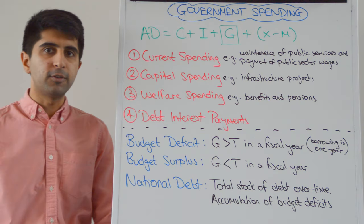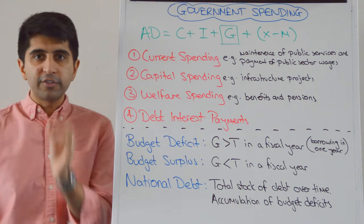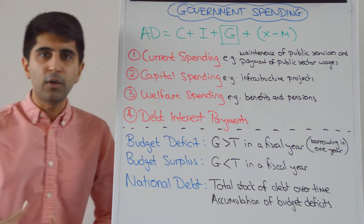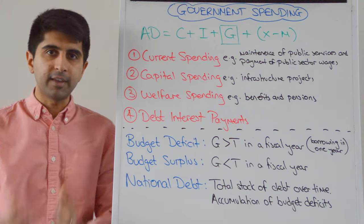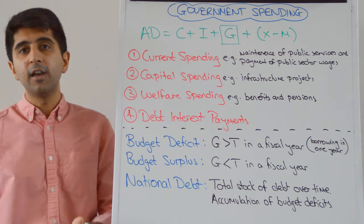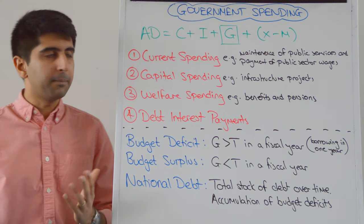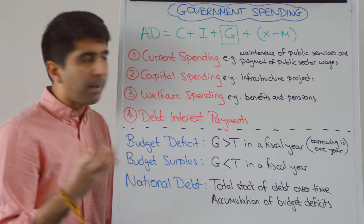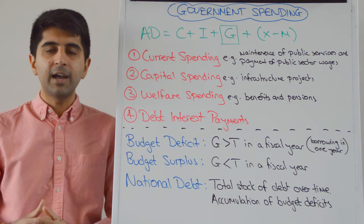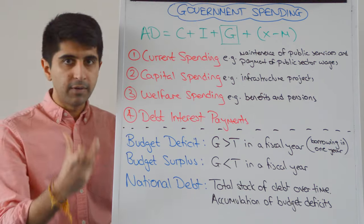What are the different types of government spending that can take place in the economy? Well, first of all you have current spending. Current spending is the spending on the maintenance of key public sector services — the maintenance of the NHS, the maintenance of state schooling, the maintenance of key infrastructures. But it's also the payment of public sector wages, so all the workers that work for the government in the public sector.